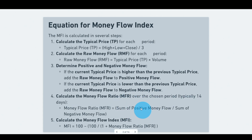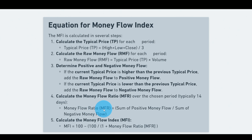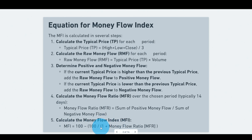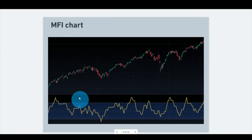We sum all positive money flow for the past 14 periods and divide by the sum of all negative money flow over the same 14 periods, giving us the money flow ratio. To convert it into an oscillator, we use the equation: 100 − (100 / (1 + money flow ratio)). This equation is not exclusive to the MFI — it can flip any value into an oscillator ranging from 0 to 100.